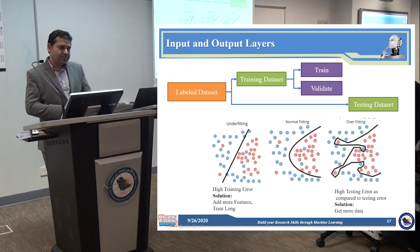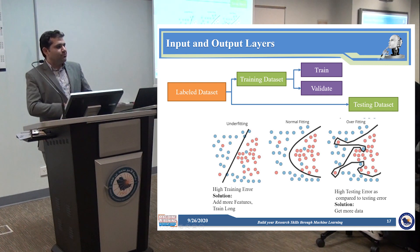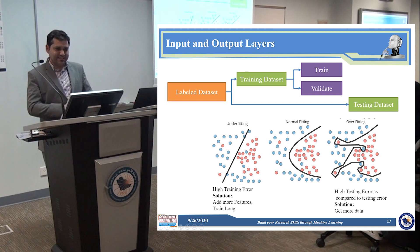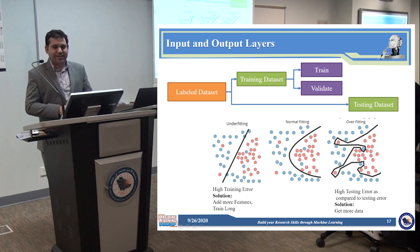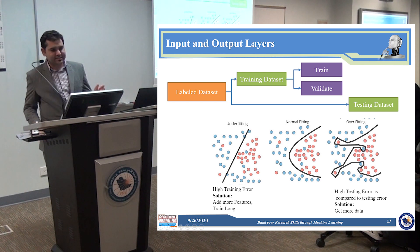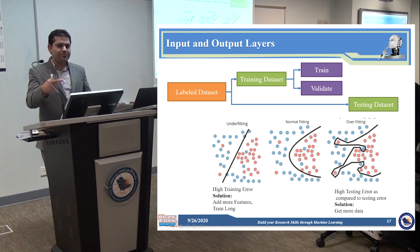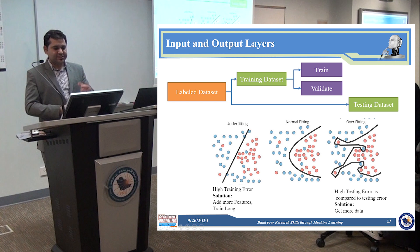In some algorithms, they use different splits, like 60 percent or 50 percent as well. And within the training data, you further divide it into trained data and validated data. The trained data will actually do the training, and for each iteration, you will use some percentage — again, about 20 percent of the training data — for validation, to improve the training process.